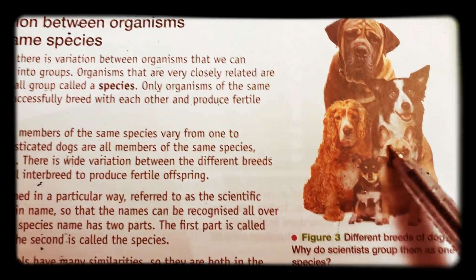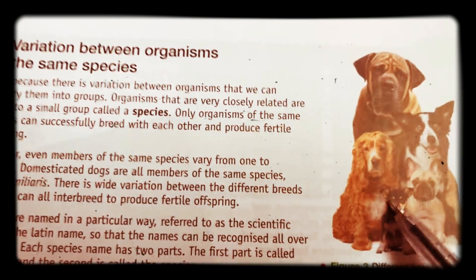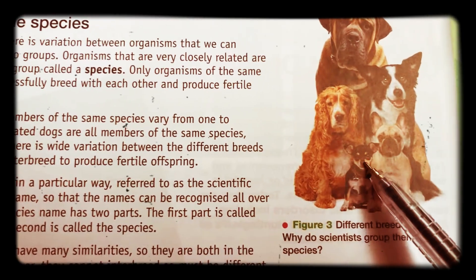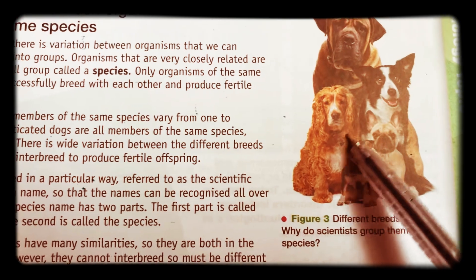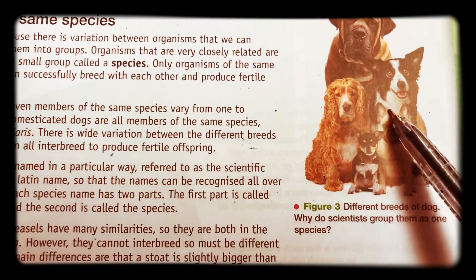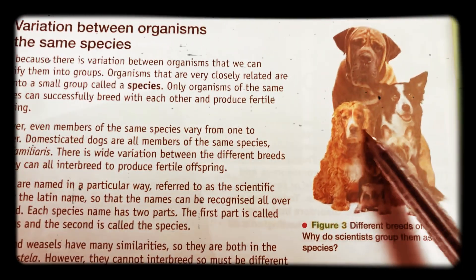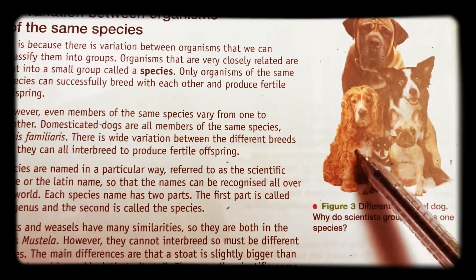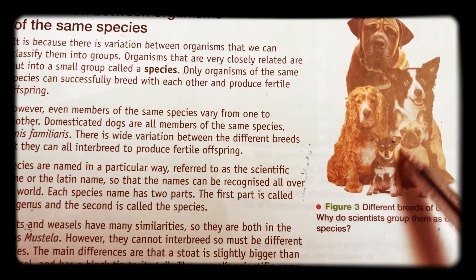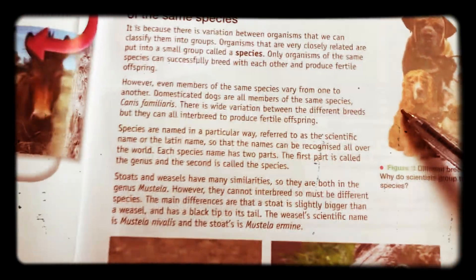Latin names are given to species. The first part is called the genus and the second part is called the species. Organisms within a species have similarities but there may be some variation between them — it might be down to genetic variation or environmental variation. If these dogs, for example, belong to the same species and they were allowed to breed, they would make puppies, and those puppies would then be able to have puppies themselves. So they belong to the same species.